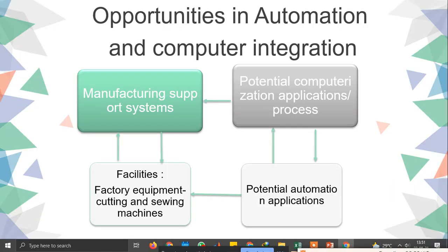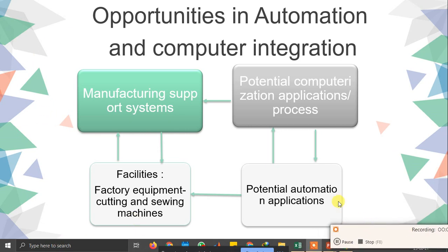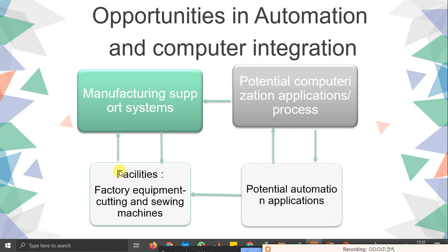Then we have opportunities existing in automation and computer integration as part of automation. You have your systems that you manufacture on a daily basis depending on market requirement — that is your manufacturing support system. All manufacturing support systems require some facility. For example, these support systems include logistics, which will also support your automation.